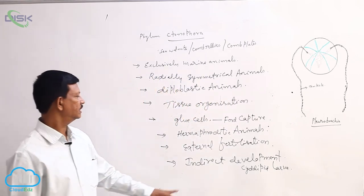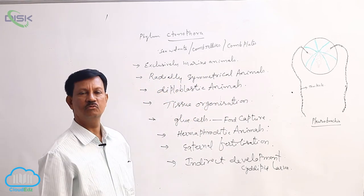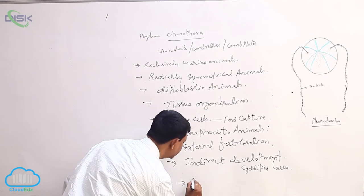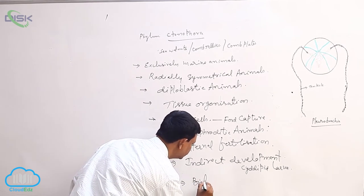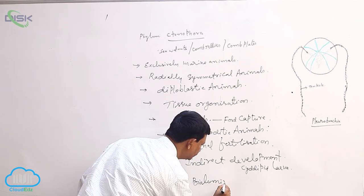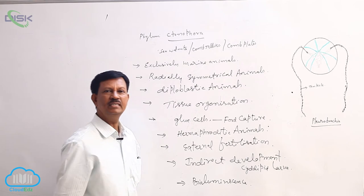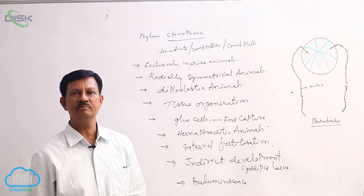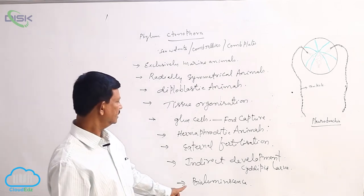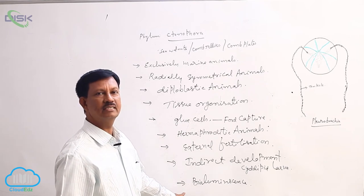Citipede larvae is present in the life history of tenophorans. They show bioluminescence. Bioluminescence means living organisms emitting light. That process is known as bioluminescence.